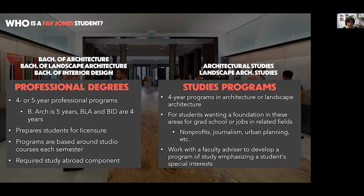The professional programs are four or five-year programs. The Bachelor of Architecture is a five-year program, while the landscape architecture and interior design options are four-year programs. These lead you up to the licensure aspects you need after graduation. So it's not that when you graduate with a Bachelor of Landscape Architecture degree you are suddenly a landscape architect, but what it does is lead you to the next step in the process of becoming licensed. Our programs lead you to the precipice of that — we do as much as you possibly can while in college, and when you graduate, you're ready for that next step.